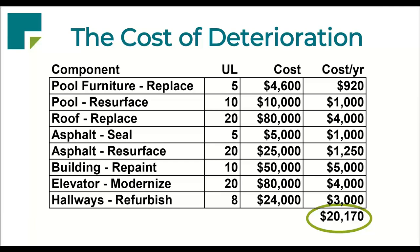There is a cost of deterioration. You have the useful life, you know what the cost is, and it boils down to how much it's deteriorating per year. You could clearly say that at our association we've been contributing, for argument's sake, $10,000 a year, but our assets are deteriorating at a little over $20,000 a year. So every year we're getting behind. These are expenses that are going to happen — reserve expenses are very predictable. The roof is going to fail. The asphalt is going to need to be resurfaced.